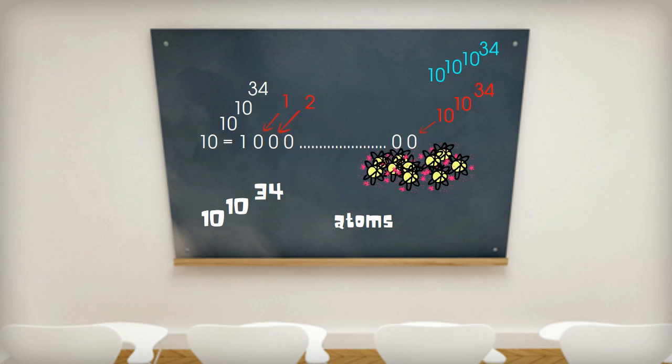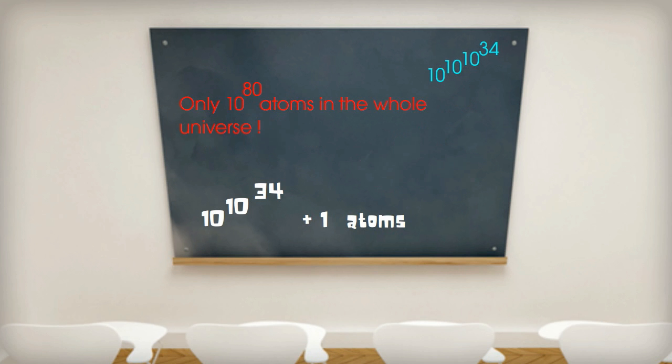And I suppose for those that are pedantic I suppose we could add one atom for the one at the start of the number. So we would need at least 10^10^34 plus 1 atoms. So here's the punchline. Physicists tell us that there are only about 10^80 atoms in the whole universe. I'll say that again. Physicists tell us that there are only about 10^80 atoms in the whole universe.